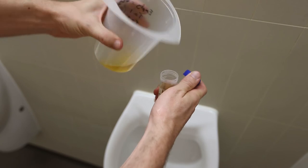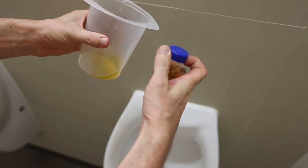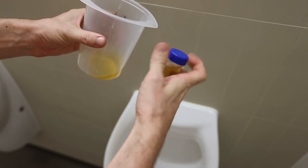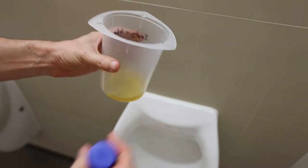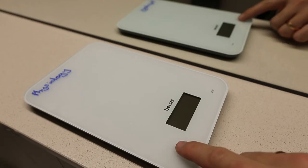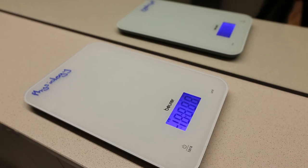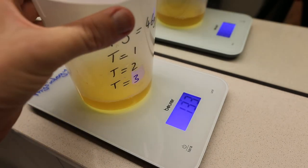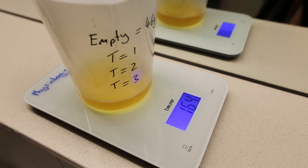For the other time points, before collecting the urine sample, you will need to measure the volume first. To do this, after collecting your urine into the beaker, place the beaker back onto the scales and again measure the weight of the beaker plus the urine. Since you know the weight of the empty beaker, you can now calculate the weight of the urine.